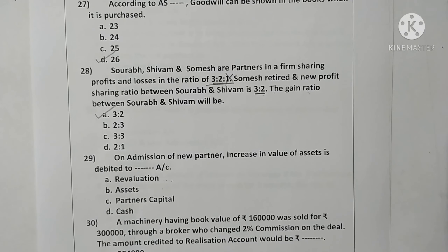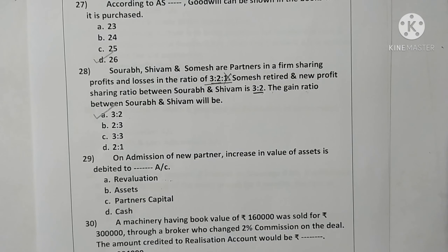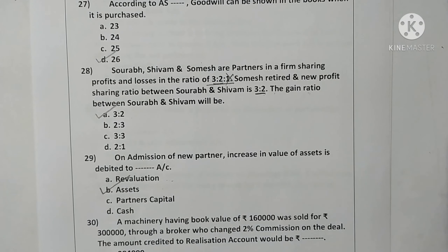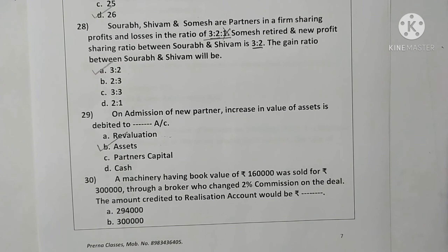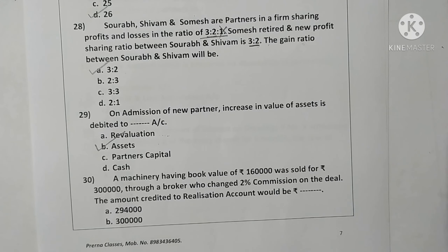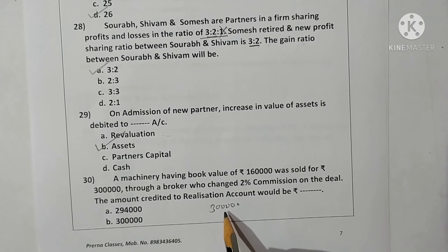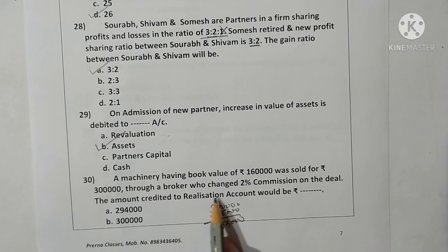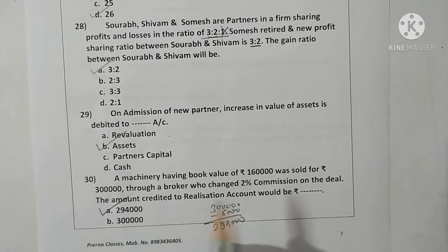Question twenty-nine: on admission of a new partner, an increase in the value of assets is debited to the asset account. Option B is correct. Question thirty: a machinery with book value Rs. 1,60,000 was sold for Rs. 3,00,000 through a broker who charged 2% commission on deal price. 2% of Rs. 3,00,000 is Rs. 6,000. Net amount received is Rs. 2,94,000, credited to the realization account. Option A is correct.